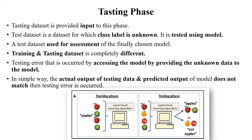The test dataset is used for assessment purposes only and measures the accuracy of your model or machine. Training and testing datasets are completely different. Testing error occurs when accessing the model by providing unknown data — for example, if you provide an orange or a mango to the machine trained on apples, an error will occur. In simple terms, the actual output of testing data is compared to the predicted output. When you pass an apple image, the machine generates 'apple' as the label — this is the predicted data, and that is the testing phase.